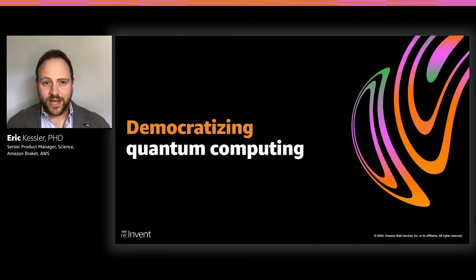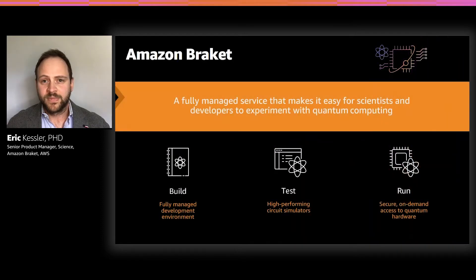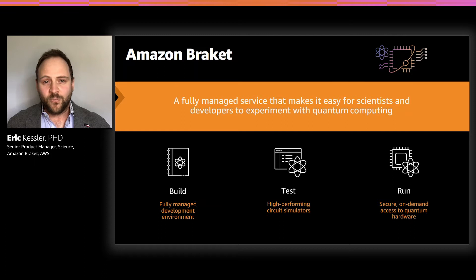That is why we have launched Amazon Braket — to democratize quantum computing and make it accessible to every scientist and every developer with the familiar on-demand model of the AWS cloud. Amazon Braket is a fully managed AWS service that makes it easy to get started with quantum computing. We have three pillars in Amazon Braket: build, test, and run.